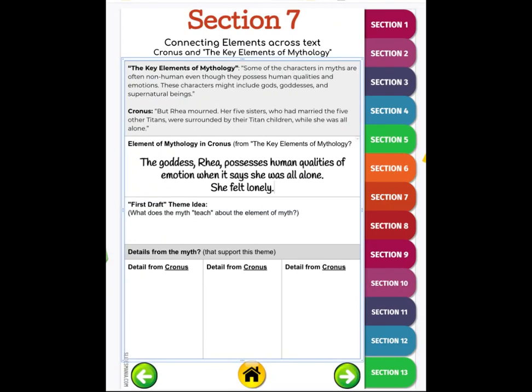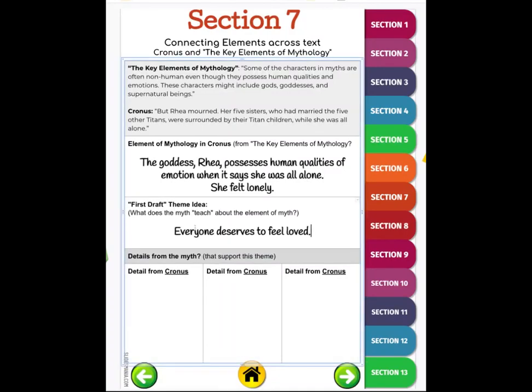My theme from just this passage: everyone deserves to be loved. That's what I think this theme is getting at. The details from the myth that support this theme, well right away it says 'but Rhea mourned,' so I am going to put that statement down in this area. Then while she was all alone, that was another one that stated everyone deserves to be loved because she had those human feelings.